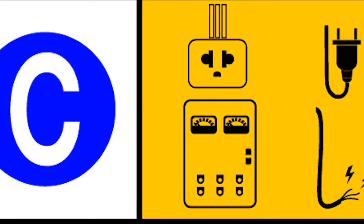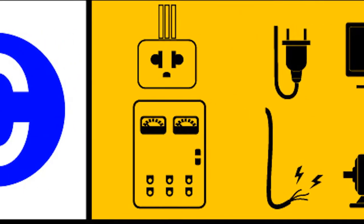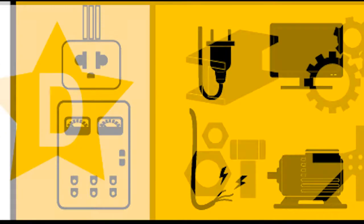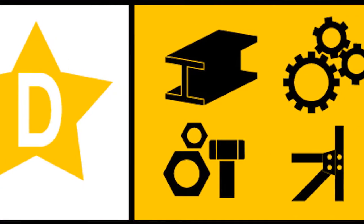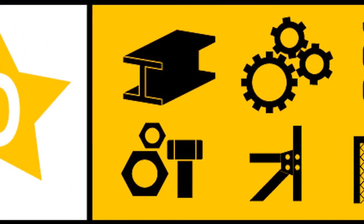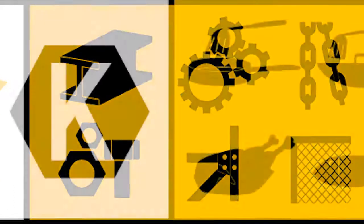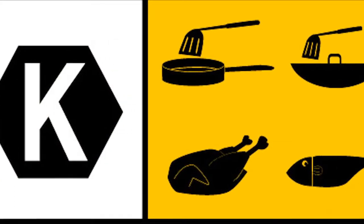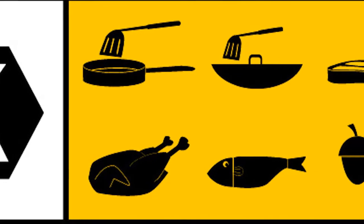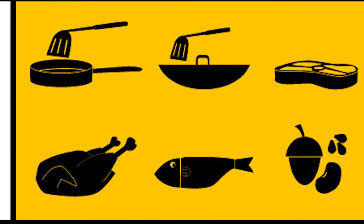Third class is a C-class, which is live electrical equipment such as computers, faxes, or service panels. A D-class fire is combustible metals such as magnesium, lithium, and titanium. The last class is a K-class fire, which involves cooking mediums, such as cooking oil and fats.